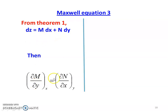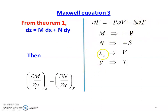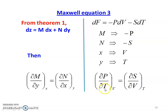Applying theorem one again with df equal to minus P dv minus S dt. Comparing: m equal to minus P, n equal to minus S, x equal to v, y equal to t. Writing the equation: dou of minus P by dou t at constant volume equal to dou of minus S by dou v at constant temperature. The negative signs cancel on both sides, giving: dou P by dou t at constant volume equal to dou S by dou v at constant temperature. This is equation number three.